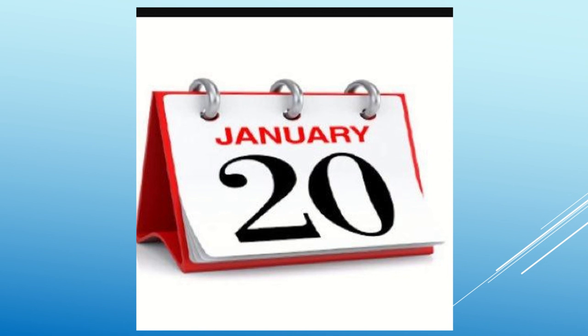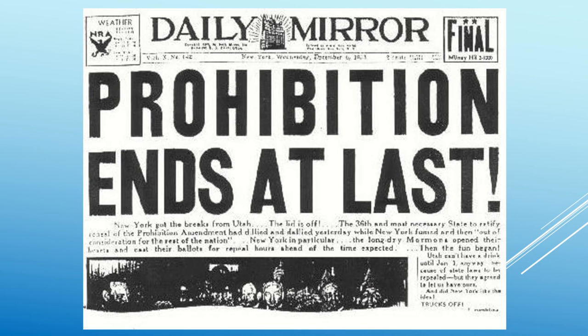Inauguration used to be in March, and then they moved it back to January. And then in 1933, Congress proposed an amendment to repeal Prohibition — the 21st Amendment. It was ratified in just 286 days. They did not take long to go back on that one.